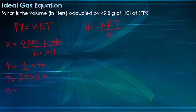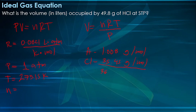The amount of gas is in moles, so we have 49.8 grams of hydrogen chloride that we need to convert into moles to use in the equation. We will need the molar mass of hydrogen chloride. The molar mass of hydrogen is 1.008 grams per mole, and the molar mass of chlorine is 35.45 grams per mole, so the molar mass of hydrogen chloride is 36.458 grams per mole.